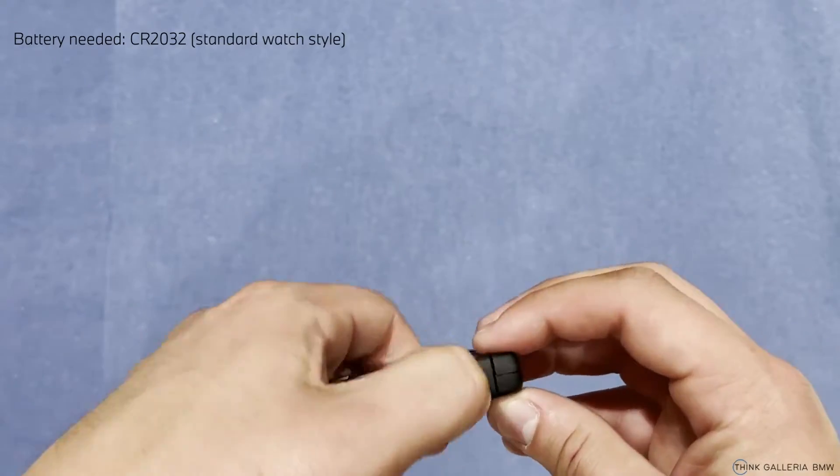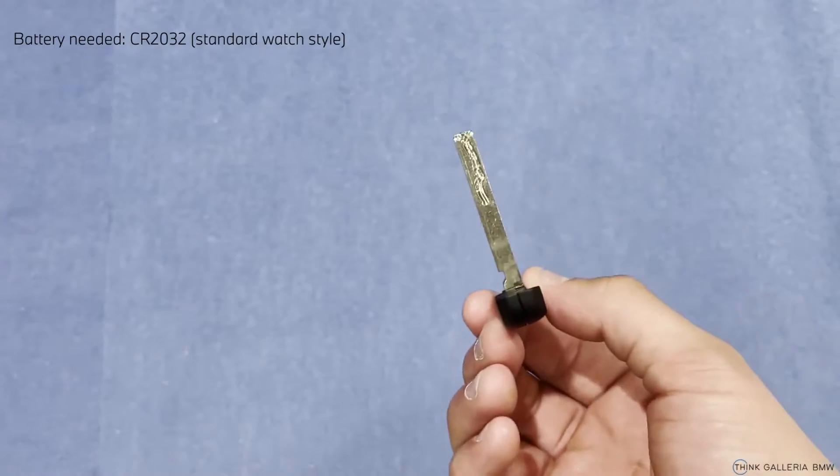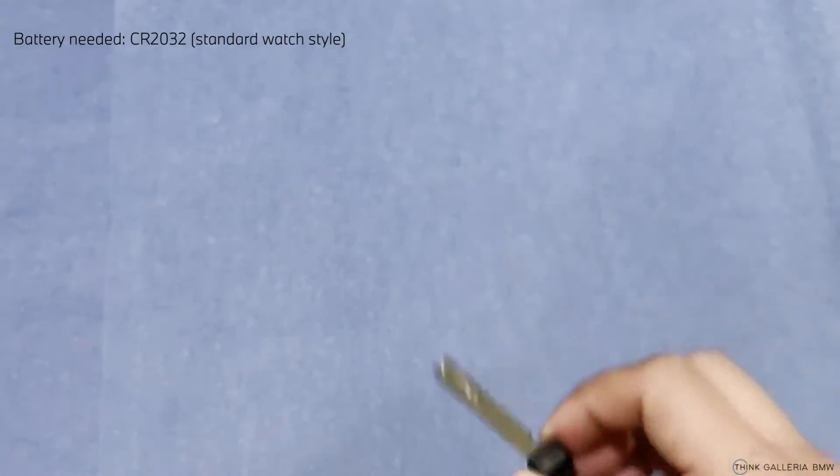So the first thing we're going to do in order to disassemble this key fob is to press this little button here on the side and take out the physical key. This can be used to open the door in case of a dead battery.